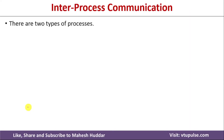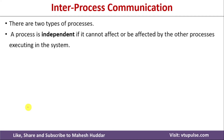Whenever we talk about processes in Operating System, there are two types of processes. The first one is known as Independent Process. A process is independent if it cannot affect or gets affected by the other processes which are executing in the system. Such a process is known as Independent Process because it is not going to affect any other process and it is not getting affected from any other process.